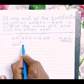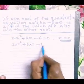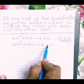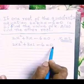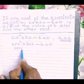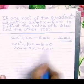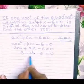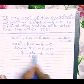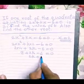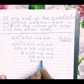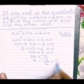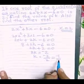Substituting: 2·(2²) + k·2 - 6 = 0. If x = 2 is a solution, it satisfies the given equation, so LHS equals RHS. Now 2·4 + 2k - 6 = 0, that is 8 + 2k - 6 = 0. So 2k + 2 = 0, giving 2k = -2. Then k = -2/2, which is -1. The value of k is -1.